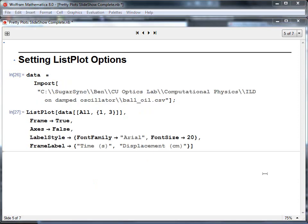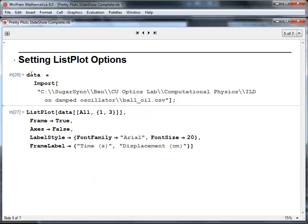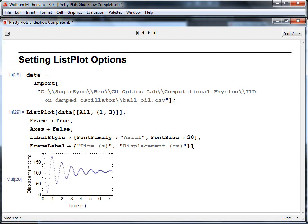I also want to quickly demonstrate how to use options in the list plot function. So the list plot function and plot function share many similar options. So first if we import some data, which happens to be a damped simple harmonic oscillator, and then list plot this data, we can add the same options: frame true, axes false, label style, change the font to Arial, the size to 20, and the frame label. All those things were the same as plot. And if we execute, we get a similarly nice looking plot.